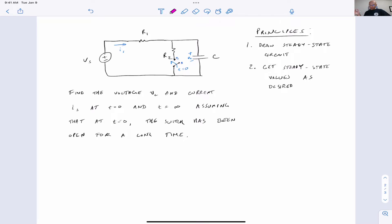And so the key words 'for a long time' indicate that we are looking at steady-state conditions, both at time zero and, of course, time infinity. That's a long time, right? So steady-state in both cases.